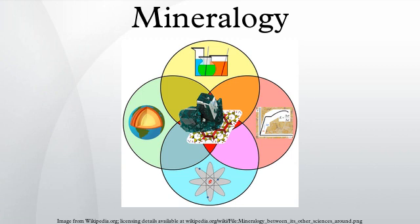The crystal structure is the arrangement of atoms in a crystal. It is represented by a lattice of points which repeats a basic pattern, called a unit cell, in three dimensions. The lattice can be characterized by its symmetries and by the dimensions of the unit cell, represented by three Miller indices. The lattice remains unchanged by certain symmetry operations about any given point: reflection, rotation, inversion, and rotary inversion — a combination of rotation and reflection.